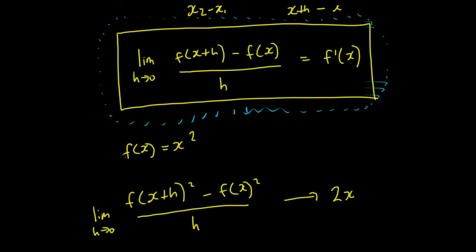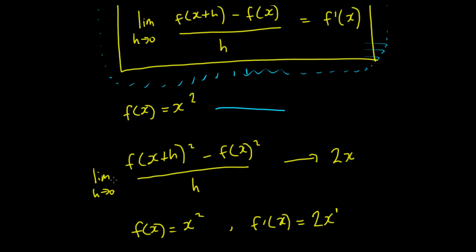So if we had, say, for example, f of x equals x squared, then we could find the derivative of that function. We could get the derivative of that function by taking the limit of f of x plus h. Now, instead of x plus h, it's x plus h squared minus f of x squared all upon h. Now, we're not going to go through all the mathematics for that, but you can end up with 2x.